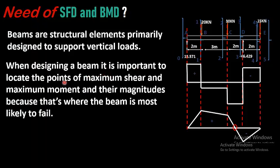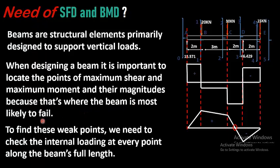For designing, it is important to look at the points of maximum shear and maximum moment and their magnitudes, because that's where the beam is most likely to fail. To find these weak points, we need to check the internal loading at every point along the beam's full length, as discussed in the section method — how to determine the maximum internal loading at every section or at every point of a beam along the full length.